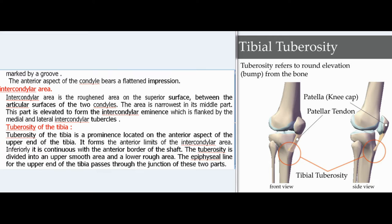The intercondylar area is the roughened area on the superior surface between the articular surfaces of the two condyles, narrowest in its middle part. This part is elevated to form the intercondylar eminence flanked by the medial and lateral intercondylar tubercles. The tuberosity of the tibia is a prominence located on the anterior aspect of the upper end of the tibia, forming the anterior limits of the intercondylar area and continuous inferiorly with the anterior border of the shaft. The tuberosity is divided into an upper smooth area and a lower rough area; the epiphyseal line for the upper end of the tibia passes through the junction of these two parts.